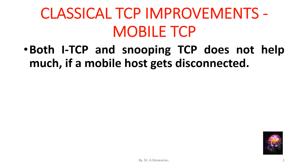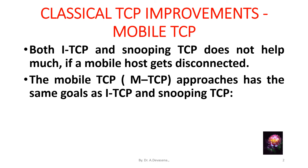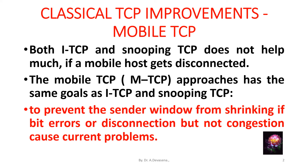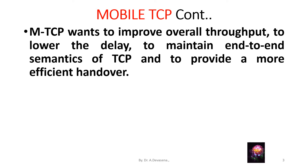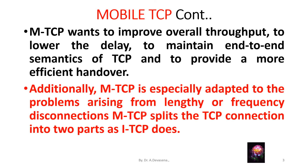Both ITCP (indirect TCP) and snooping TCP do not help much if a mobile host gets disconnected. The Mobile TCP (MTCP) approach has the same goals as ITCP and snooping TCP: to prevent the sender window from shrinking if bit errors or disconnection — but not congestion — cause current problems. MTCP wants to improve overall throughput, lower delay, maintain end-to-end semantics of TCP, provide more efficient handover, and is especially adapted to problems arising from lengthy or frequent disconnections.